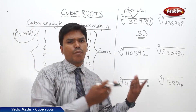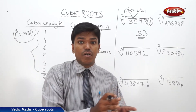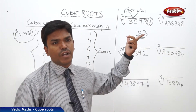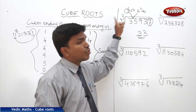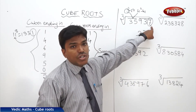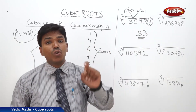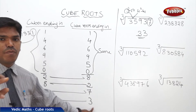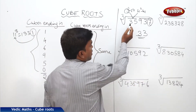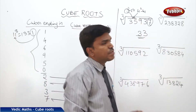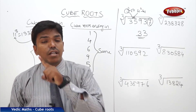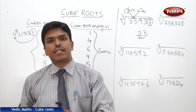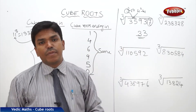Unlike square roots where there are two possibilities to check, here we get only one possibility, so we can directly state the answer. To summarize: Step 1 — make the partition into 3-digit groups. Step 2 — check the last digit of the cube number; here it's 7, so the cube root ends in 3. Step 3 — check the second partition number, 35; it comes between 3 cubed (27) and 4 cubed (64), so we take the lesser number, 3. The complete answer is 33.